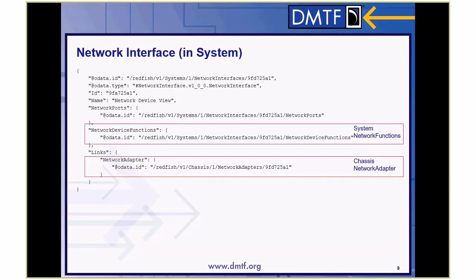Here's an example of a network interface — the one in the computer system. It has the standard properties up top: OData type, ID, OData ID, and the name — this is a network device view. It's got a collection of network ports and a collection of network device functions — the network device functions that are assigned to this particular system — and it has a link to the chassis network adapter. It also has links to the network ports, and assigning a network device function is how you populate that collection.